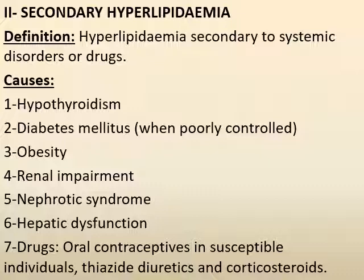Secondary hyperlipidemia is hyperlipidemia due to a systemic disorder or drug. The systemic disorders that may cause hyperlipidemia include hypothyroidism, diabetes mellitus, obesity, renal impairment, nephrotic syndrome, hepatic dysfunction, and drugs such as oral contraceptives, immunosuppressants and corticosteroids.